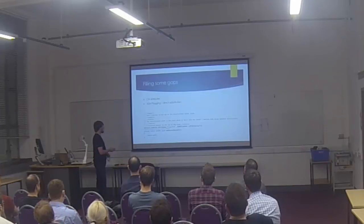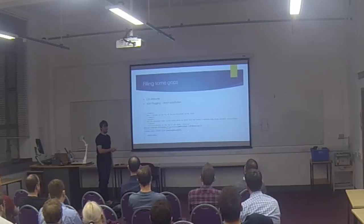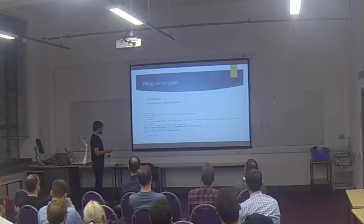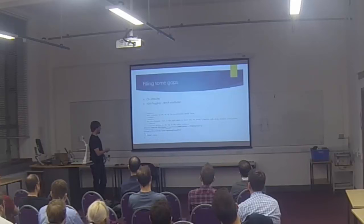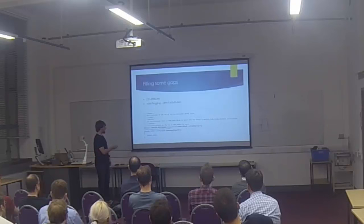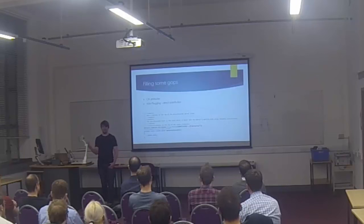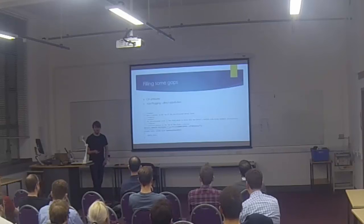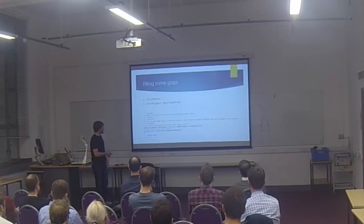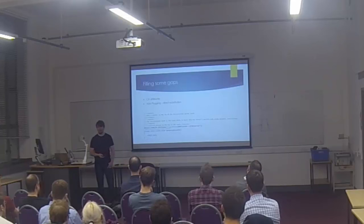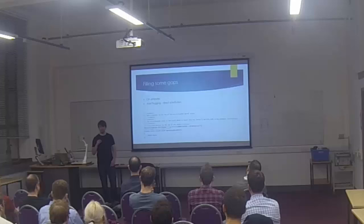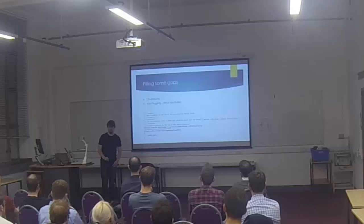Assuming you hand-coded the assembly correctly — following the calling convention and using the right method label name — you can call this method from other C# code without a problem. This method also allows us to sequence particular blocks of ASM so you can put them right at the start or right at the end of the operating system. That lets you do various bits of initialization code, like processor initialization when the bootloader first starts the operating system.